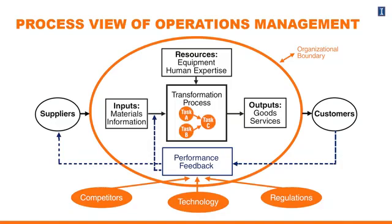Now that we have the process view of operations management, you also want to think about using this process view for different things you see around you. One thing to keep in mind is the level of granularity at which you study a process. You could be talking about a large organization that makes cars — the inputs are things bought from suppliers and the outputs are cars delivered to you. However, there are going to be many sub-processes within this large process, and each of these sub-processes can be studied.